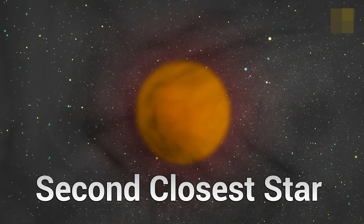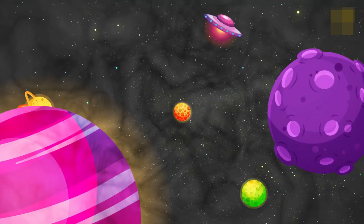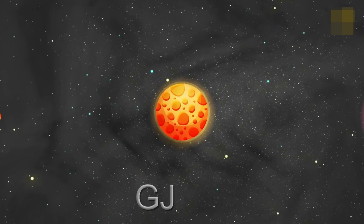This star is the closest single star and now the second closest star system to our own Sun. At only six light-years away, astronomers named this newfound planet Barnard B.